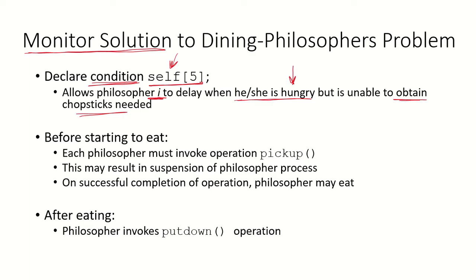Before any philosopher starts eating they must invoke the pickup operation. This involves picking up the chopsticks, which refer to the semaphores controlling access to the shared bowl of rice. If the philosopher invoking this pickup operation is unable to get the chopsticks, that process will be suspended. If the pickup operation is successful, the philosopher may eat, and after eating the philosopher will invoke the put-down operation to release both chopsticks.